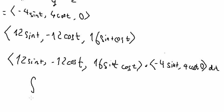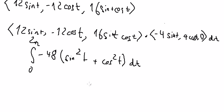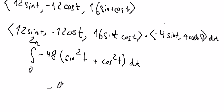So we get the integral from 0 to 2π and we get negative 48 sin(t) squared plus another term. Evaluating gives us negative 96π.